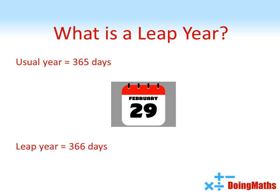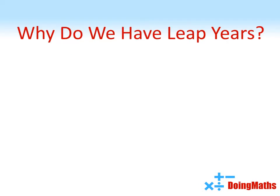But why does this happen? This is all to do with how we define our days and years. One day is the time taken for the Earth to spin once on its axis, while one year is the time taken for the Earth to complete one full orbit of the Sun. Unfortunately, these two measurements don't match up nicely, and one solar year equals 365.2422 days.